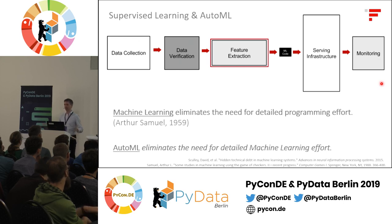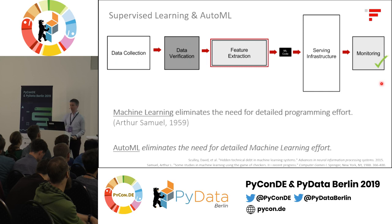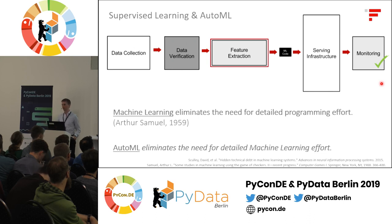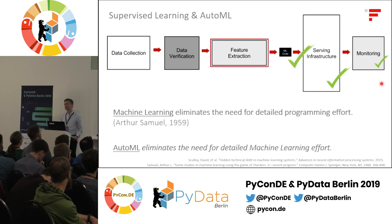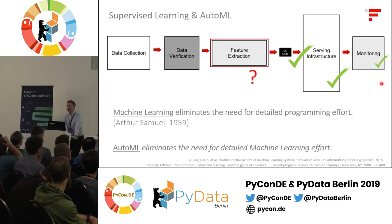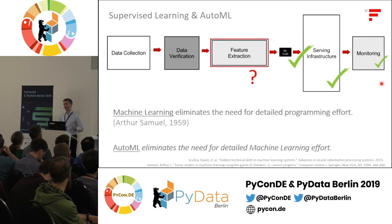Luckily, to the rescue comes automated machine learning, or AutoML, which we could define as eliminating the need for detailed machine learning effort. Walking upstream this pipeline, monitoring can be automated technically. Serving infrastructure is what DevOps is all about. For the machine learning code itself, that was last year's talk. And today we're thinking about automation of feature engineering. The first two boxes — data collection and verification — are very close to human intuition, and maybe we need some more material for next year.